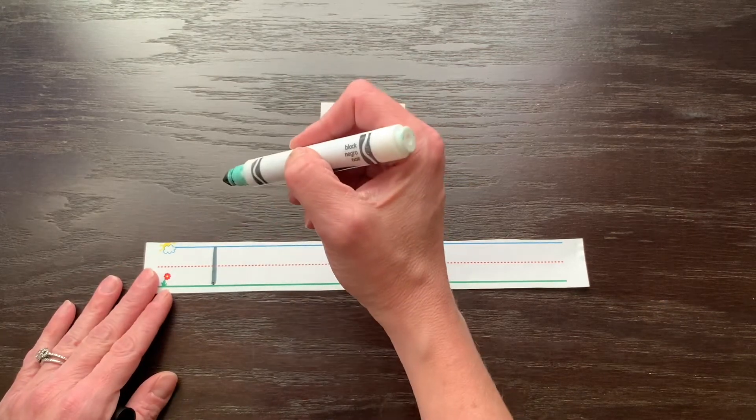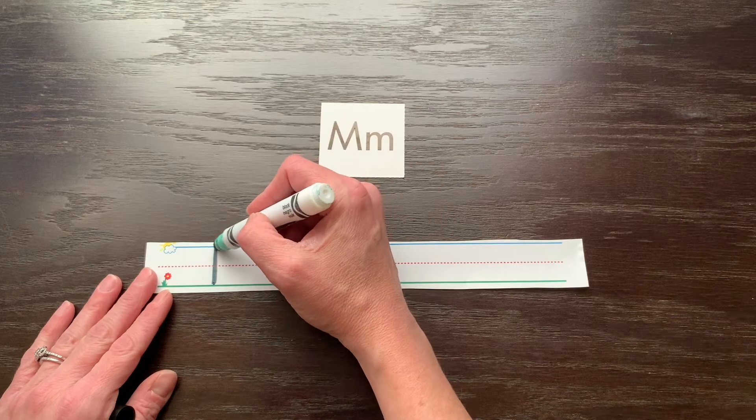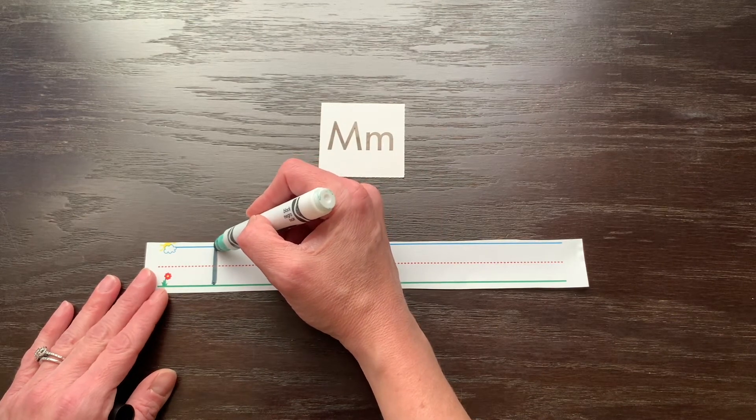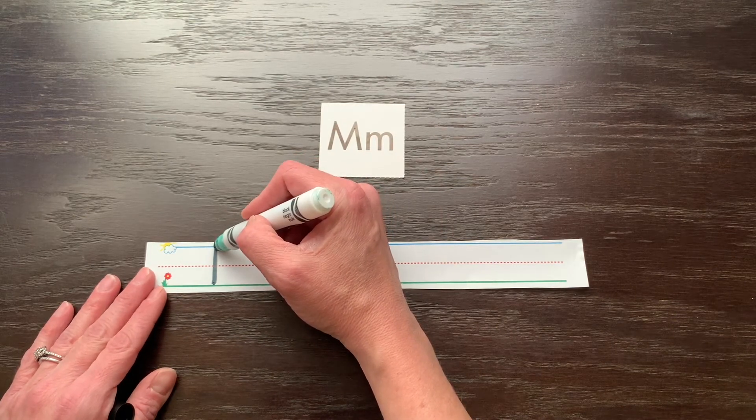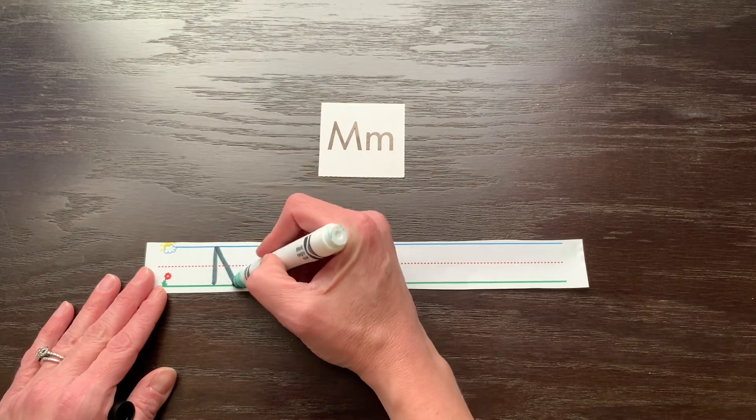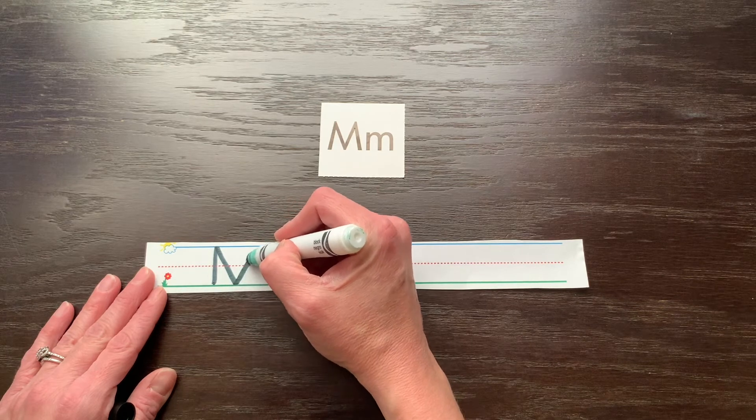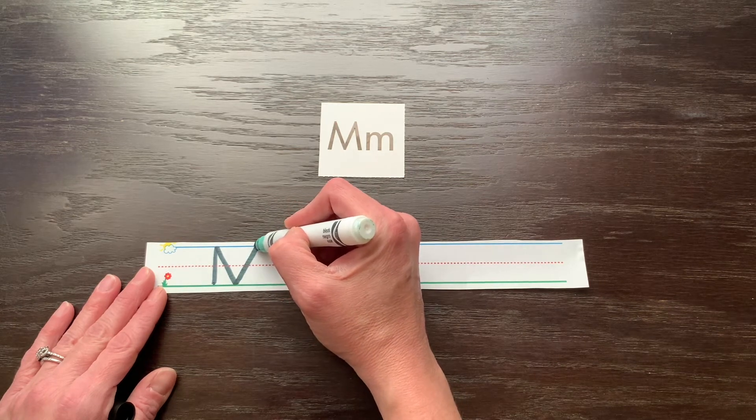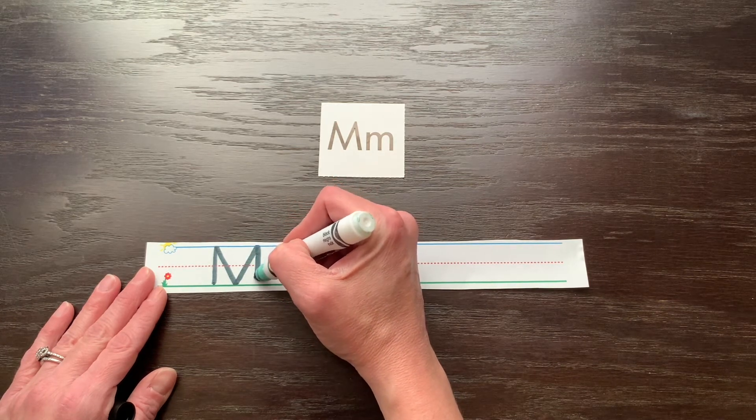So you're going to pick your pencil up, go back to the top, and now we're going to do a slide line which is a diagonal just like a slide at the playground. You're going to slide all the way to the ground. Touch the ground. Climb the mountain all the way back to the top and then you're going to go straight back down to the ground.